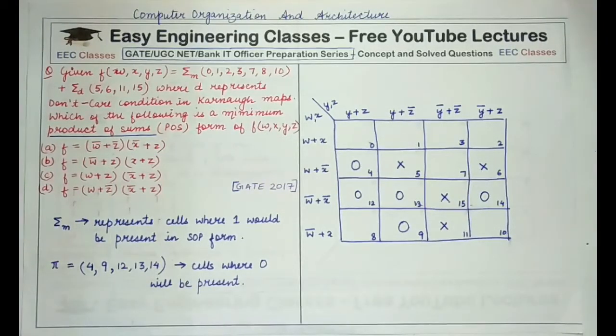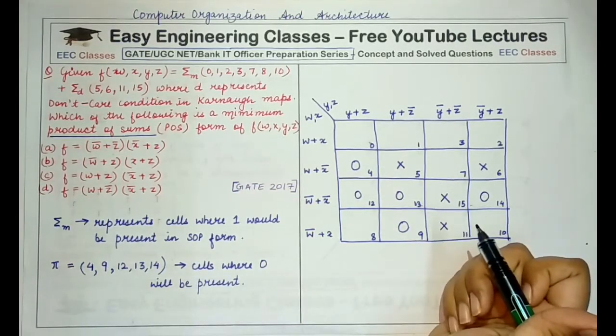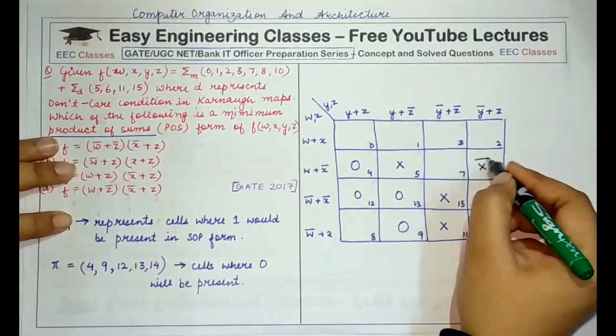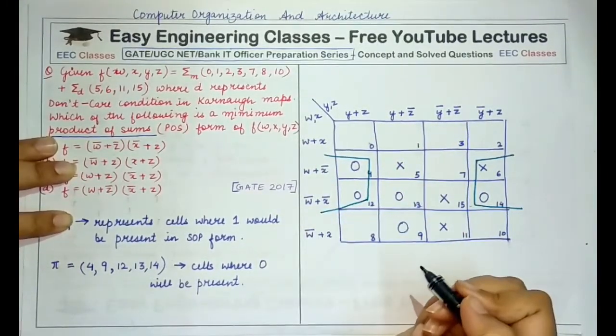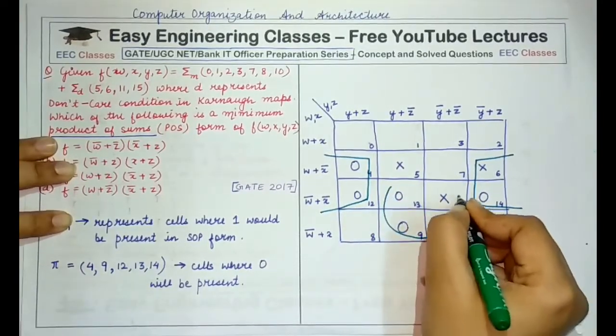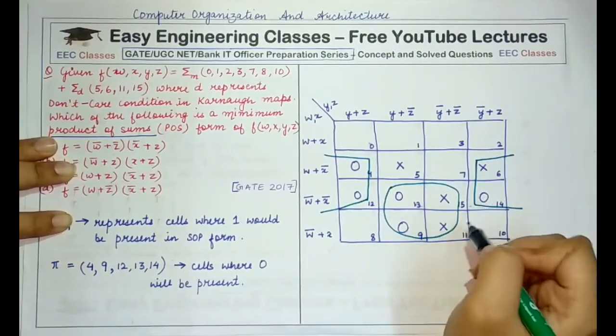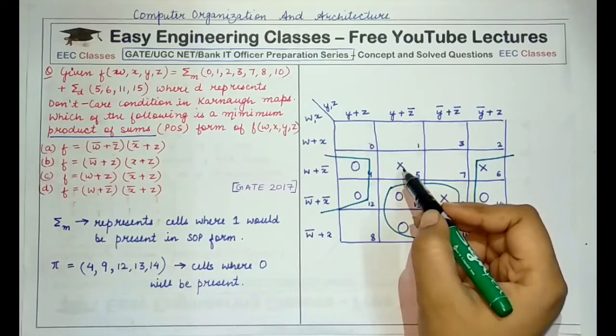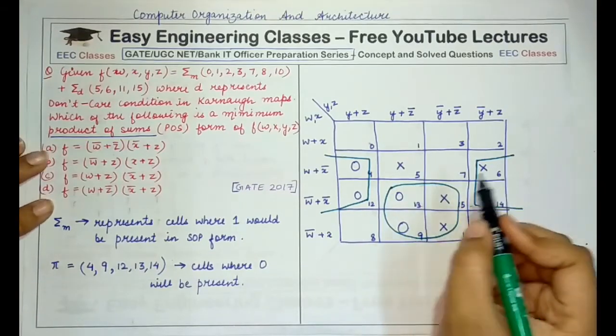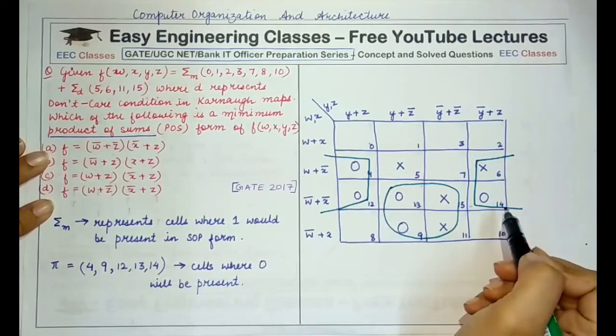Now we have to combine them so that we can form the largest possible group that is a multiple of 2. One group that can be formed is comprising of these four values, and the other group comprises of these four values so that all the zeros are used in some group. You don't have to specifically form a group only because this don't care is left. You can leave it as it is.